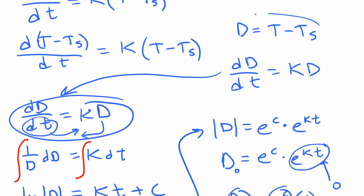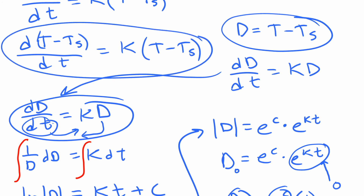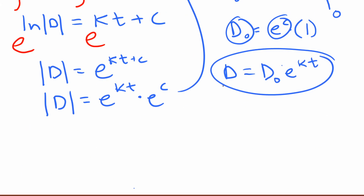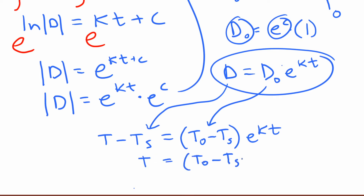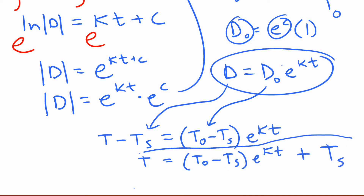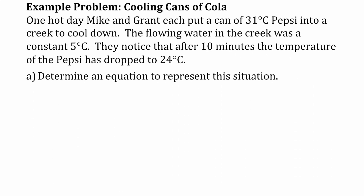We used D instead of the difference to simplify the differential equation, so we substitute back: D becomes T minus Ts and D₀ becomes T₀ minus Ts. Moving Ts to the other side to isolate T, we get the final equation: T = (T₀ - Ts) · e^(Kt) + Ts. That's the equation we'll use to solve problems.